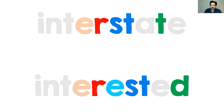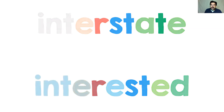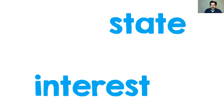Down below, there's an E between the R and the S-T, so you can see the word 'rest.' Up top, the end of 'interstate' — I made it green — it looks like 'eight,' so there's the word 'state.' Down below, 'interested' does have an E-D ending, and you actually pronounce the E-D: 'interest-ed.' If you take a look at the root words, interstate — the root word is 'state.'